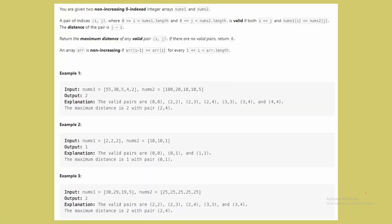The problem says you're given two non-increasing zero-indexed integer arrays, nums1 and nums2. That means both arrays are sorted in decreasing order. A pair of indices (i, j), where i is within the range of nums1 and j within nums2, is called valid if i is less than or equal to j, and the value at index i in nums1 is less than or equal to the value at index j in nums2.